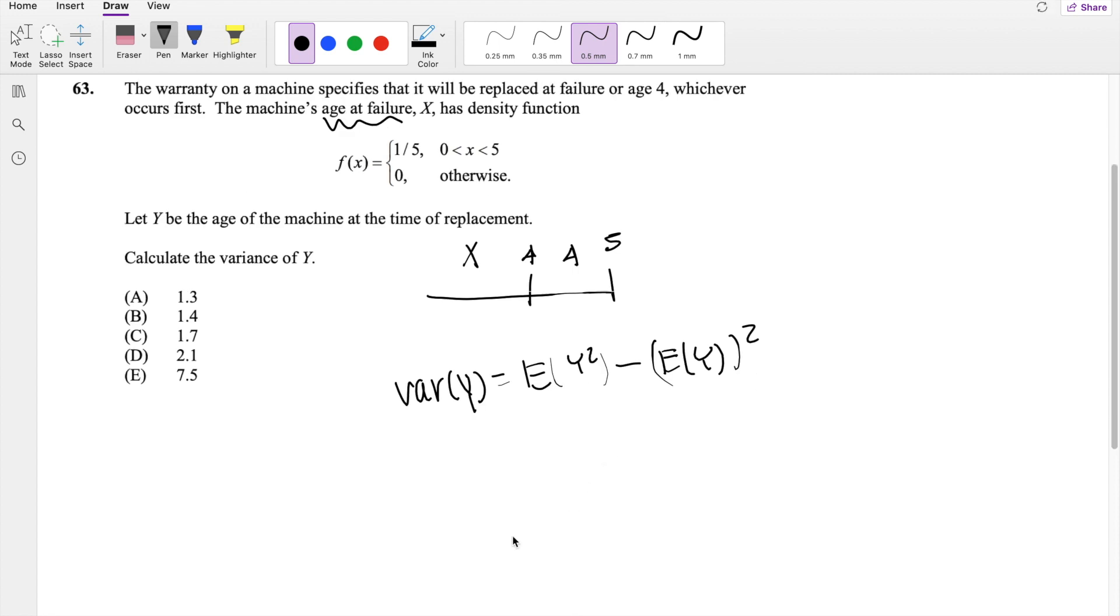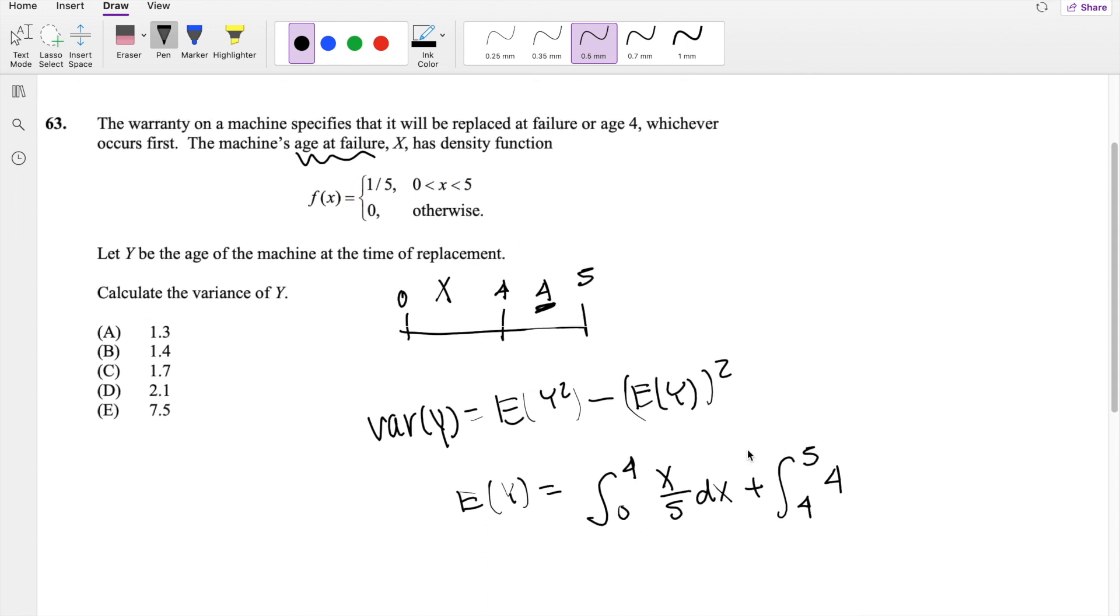So then the first moment, let's figure out the expected value of y. From 0 to 4, the expected value is x times the probability distribution function, which is x/5 dx, plus from 4 to 5, no matter what, it's always going to be 4. So it's going to be replaced at 4 years, over 5 dx.